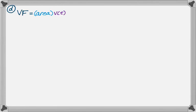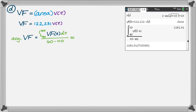My function, copying my answer previously, will just be 122.231 times v(t). I have to find the average value on 40 to 60. So the average value is the integral from 40 to 60 of VF(t) dt divided by 60 minus 40.